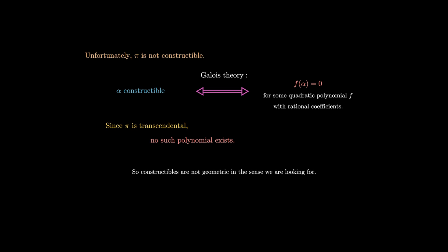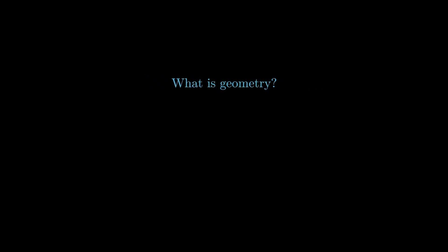Unfortunately, pi is not a constructible number. Galois theory tells us that alpha is constructible if and only if it is given by the root of some quadratic polynomial with rational coefficients. Pi is transcendental, so no such polynomial exists by definition. So constructible numbers are not really the geometric interpretation of numbers that we're looking for. Remember, we're asking whether e is geometric in the sense that pi is geometric, so we may need to ask a more general question — namely, what is geometry? What is the geometric interpretation that we're looking for?